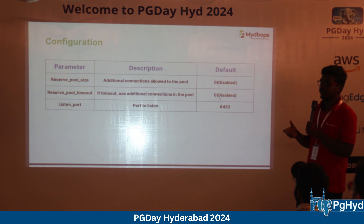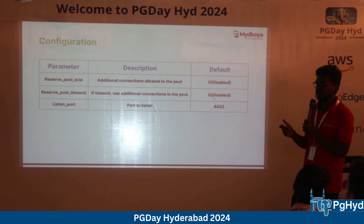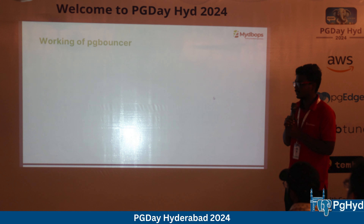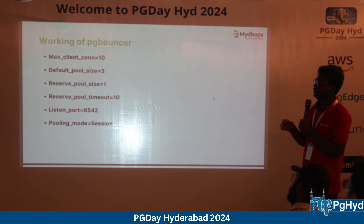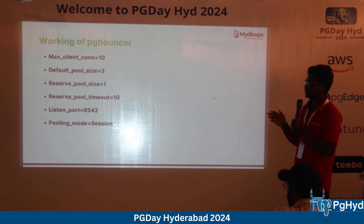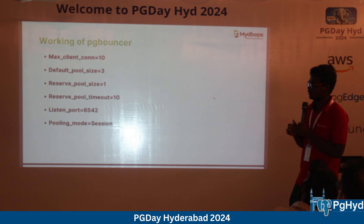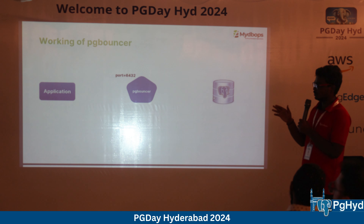We've covered the two most important PG Bouncer settings: pooling mode and authentication method. A question was raised: can we use different pooling modes for a single database? For a single database, only one pooling mode can be used. However, within a single PostgreSQL instance, database A can use one mode (e.g., session) and database B can use a different mode (e.g., transaction).